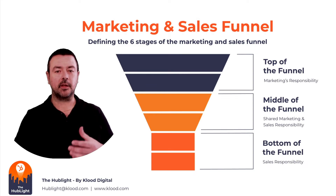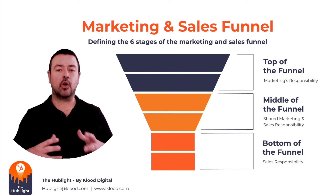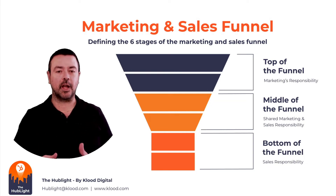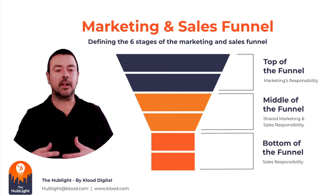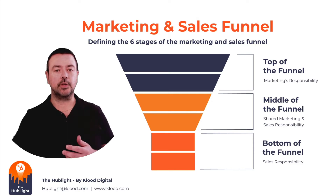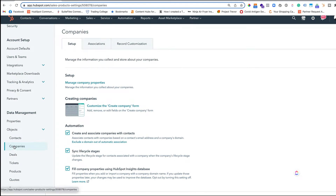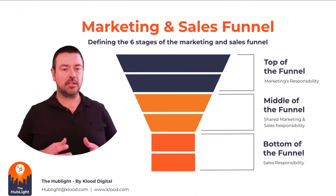We have a funnel and the main stages — the blocks that you see — are defined by the lifecycle stage property, which is on both the contact and the company records within HubSpot. Generally speaking it's a good idea to keep them aligned so that they're both the same, and that can be done automatically by a simple setting. To do that, go to your settings cog, select Companies on the left-hand side, and you'll see 'Sync lifecycle stages'.